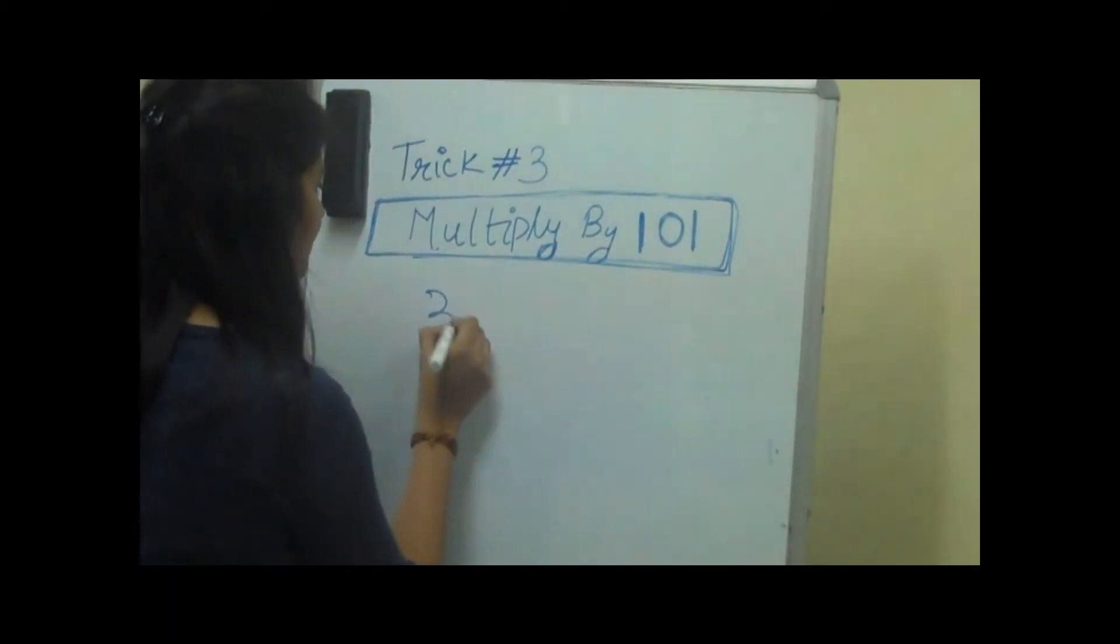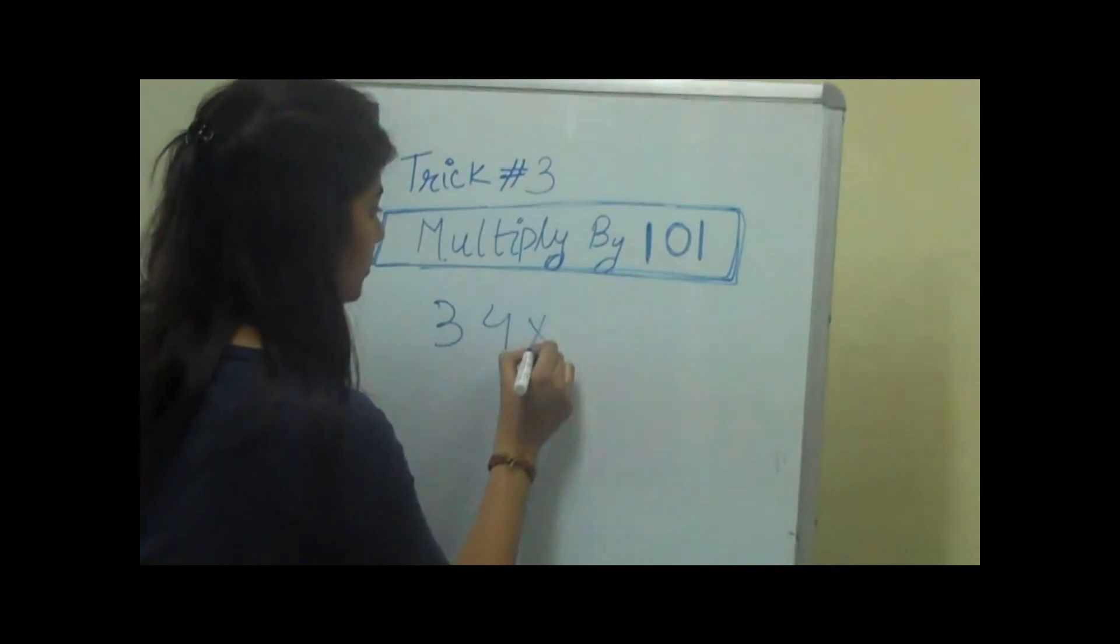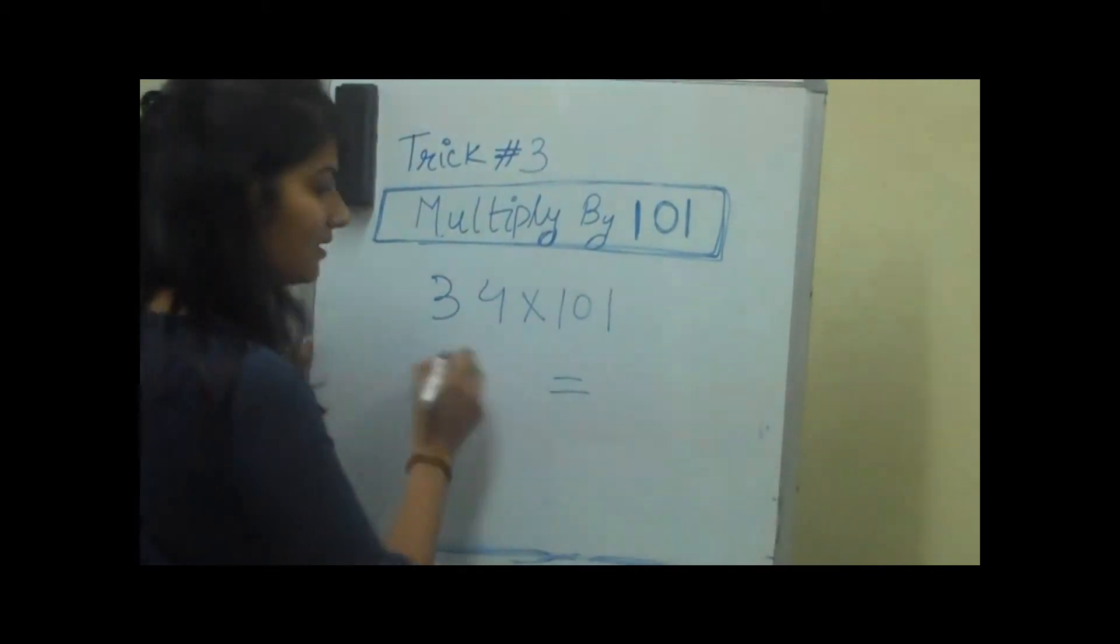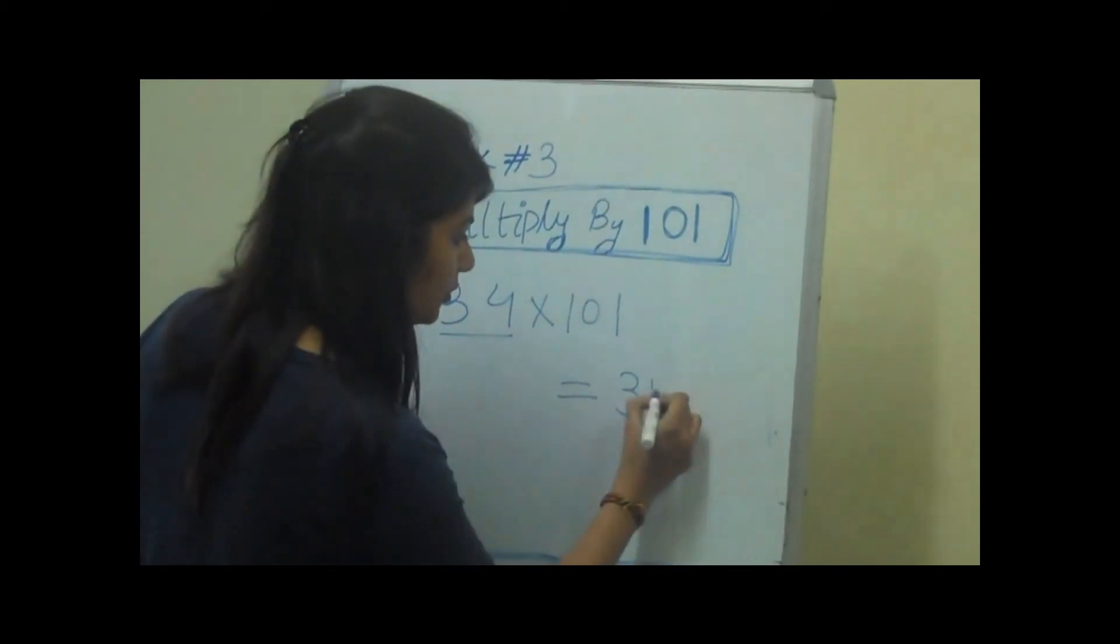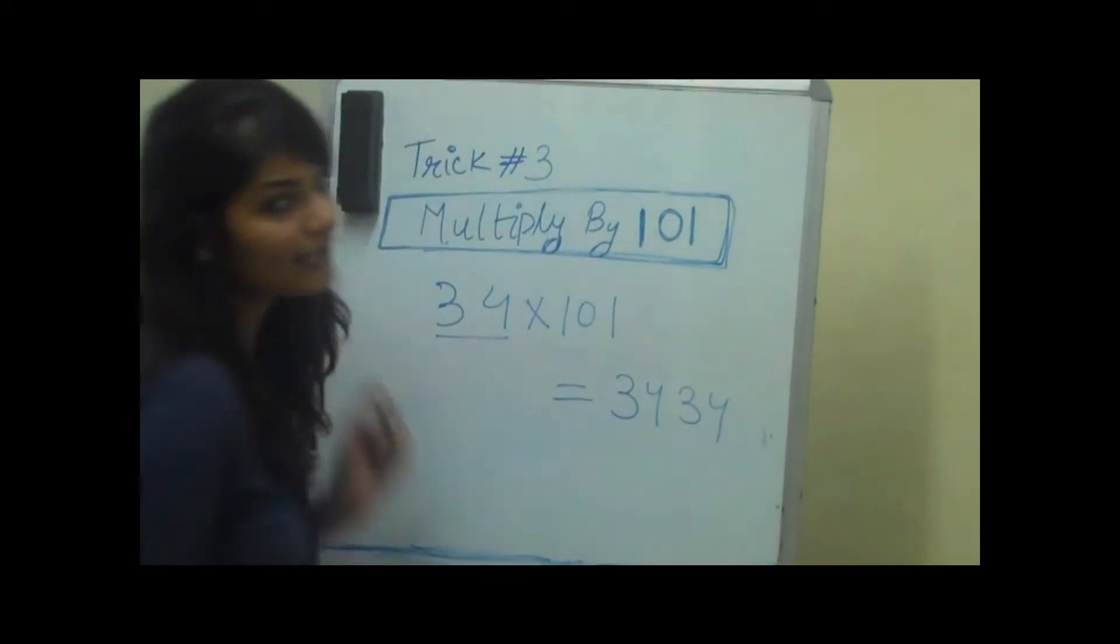If we have a number 34 and we want to multiply it with 101, we simply put 34 twice. That's it.